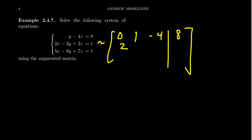We're going to get a zero in the first position because there's no x in that first equation, then 1, negative 4, and then 8 for the first row. Then you're going to get 2, negative 3, positive 2, and 1. And then lastly, 5, negative 8, 7, and 1.